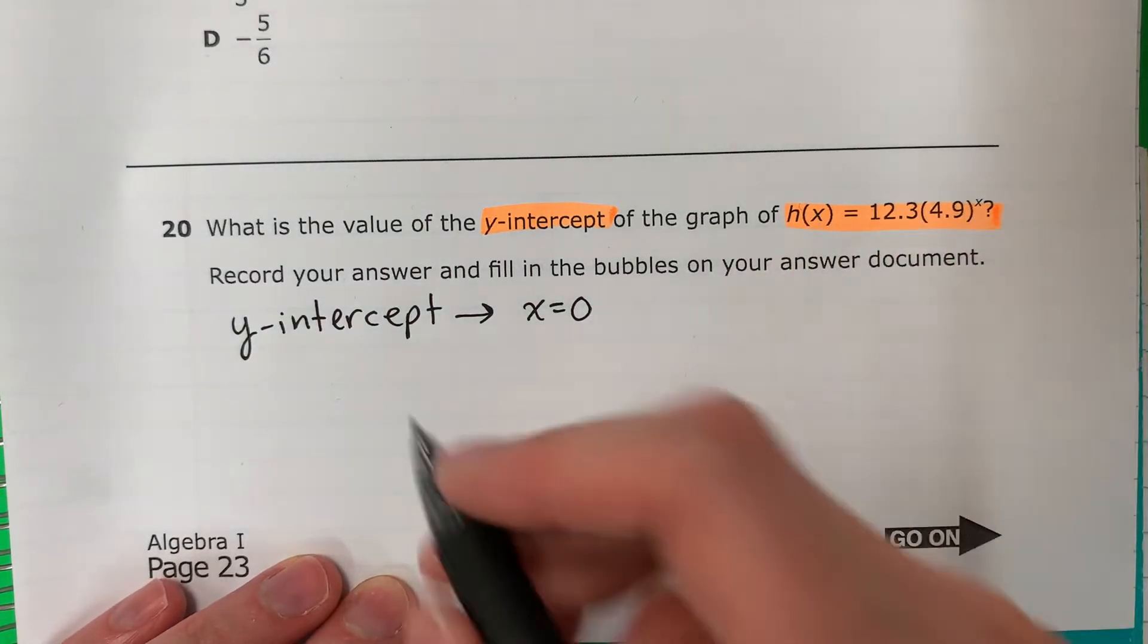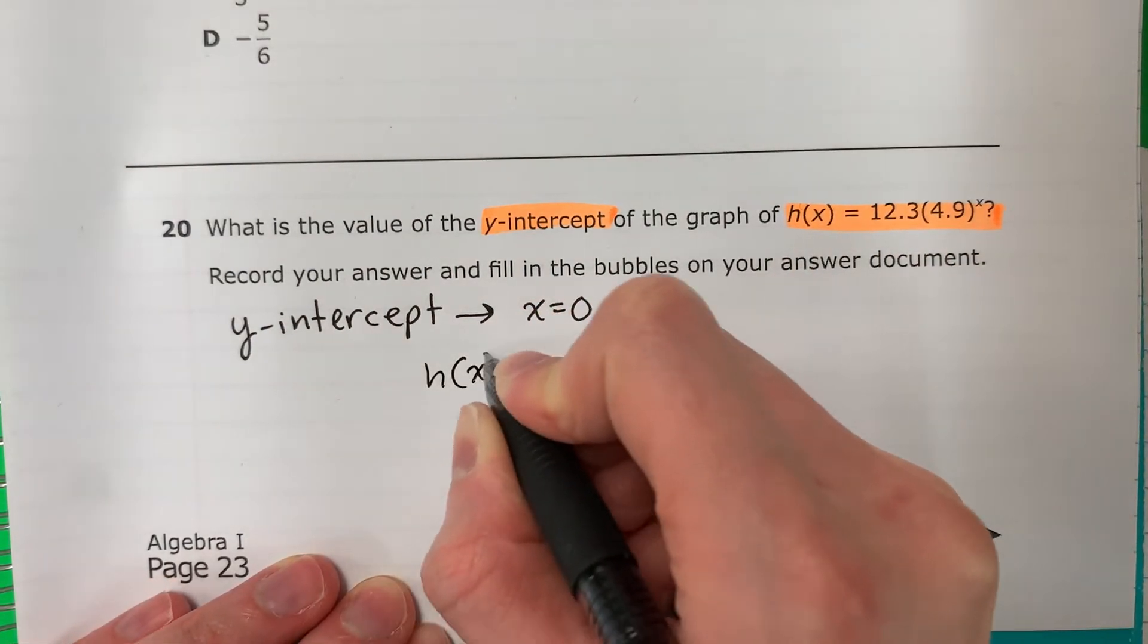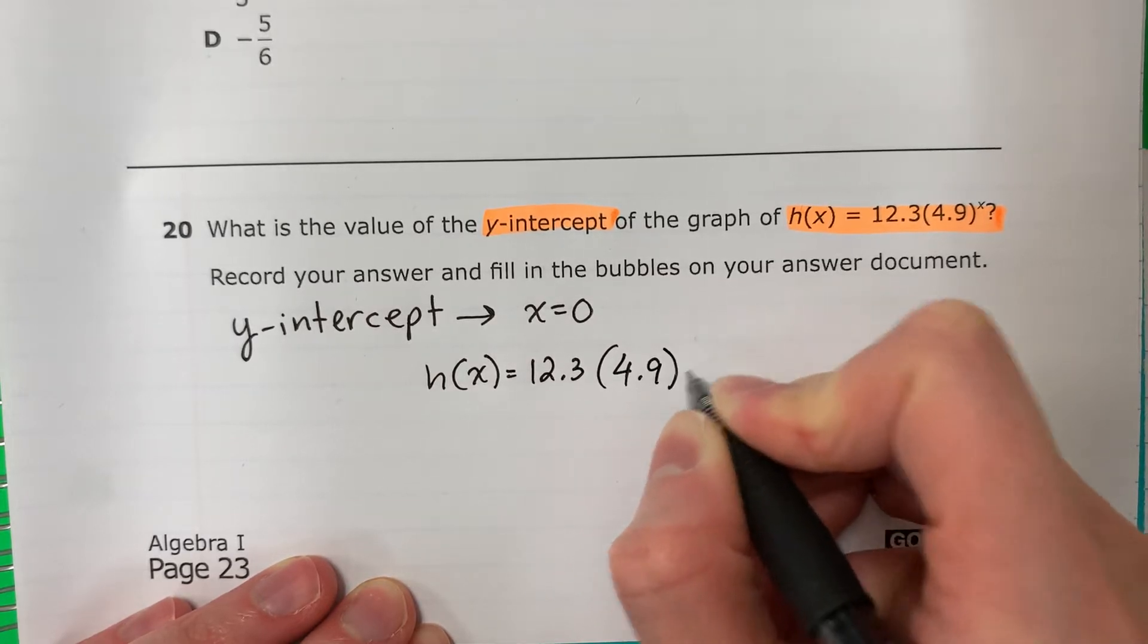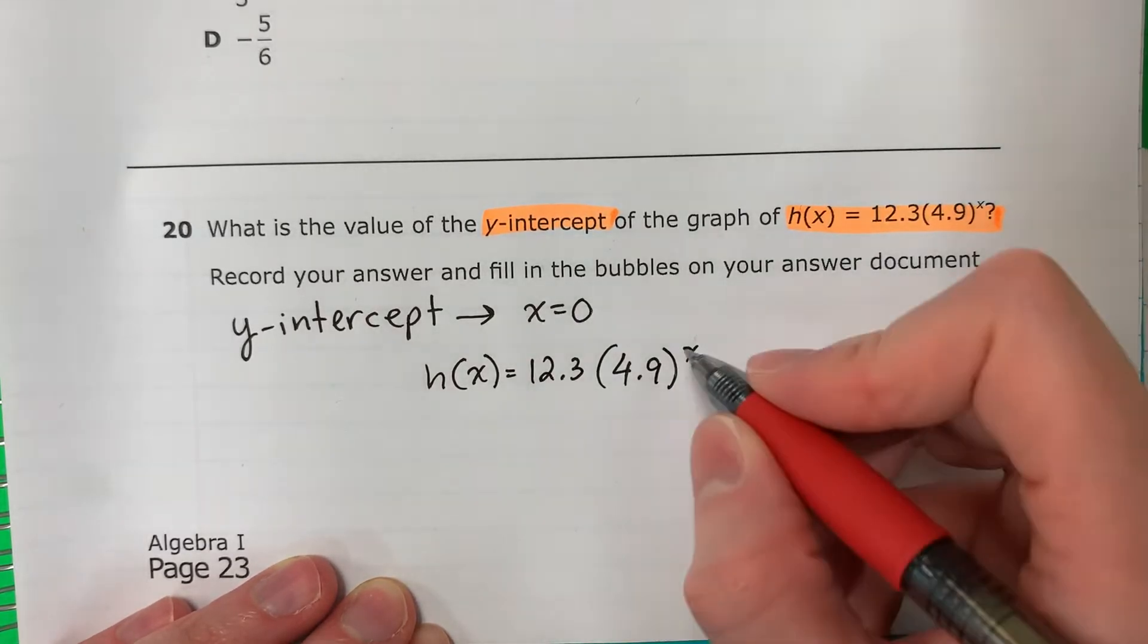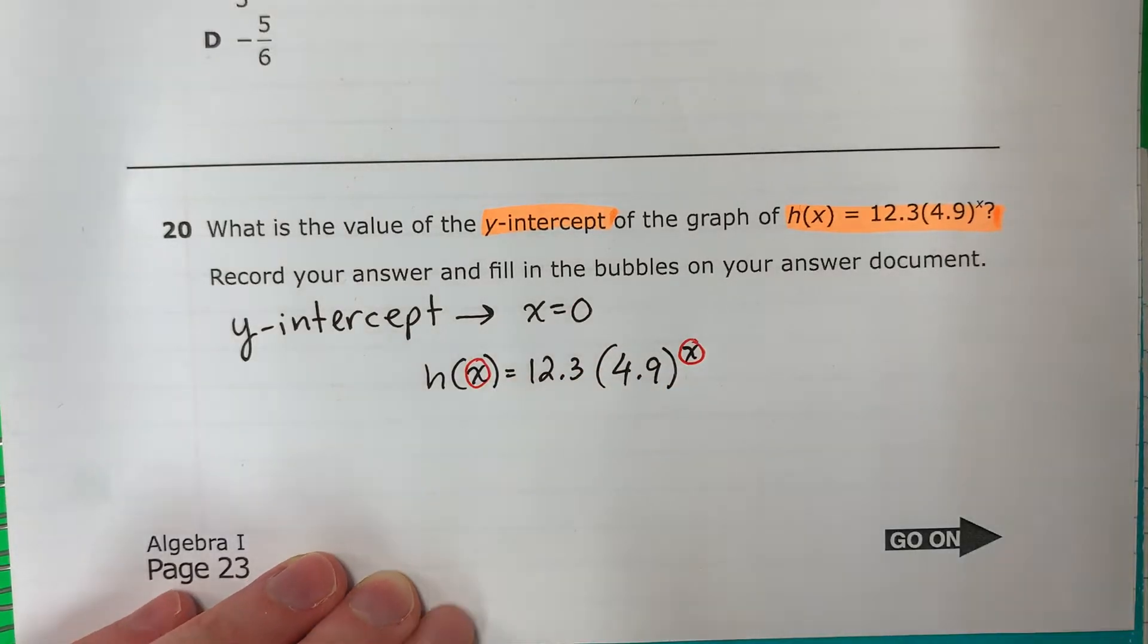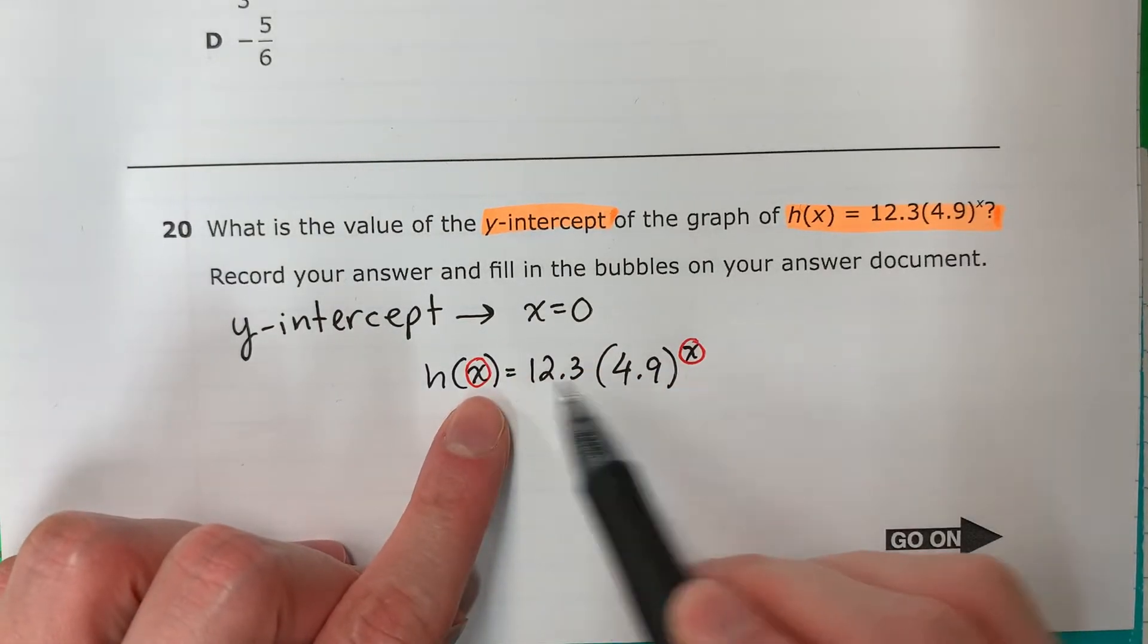So I'm going to go ahead and take this equation. I'm going to copy it. And what I'm going to do is, every time there's an x, I need to put 0. Que voy a hacer es que en todos los lugares que hay un x, necesito poner 0.